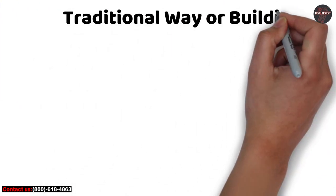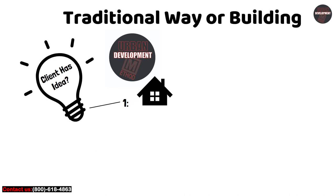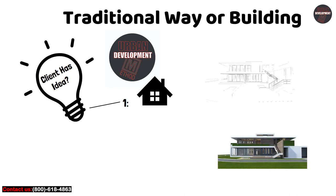In the traditional general contracting method, owners first hire an architect who designs the facility, then bid out construction work to contractors, often selecting the low bidder.